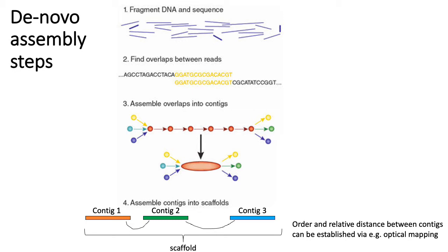In step three, you construct what's called an overlap graph. In an overlap graph, the circles represent individual reads you've sequenced, and an arrow leads from one read to another if the suffix of one read overlaps the prefix of another. Based on these graphs, you can identify contigs — contiguous sequences — which refer to regions of the genome that are unambiguously one definitive segment of the original genome sequence.